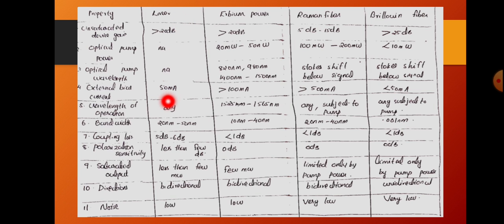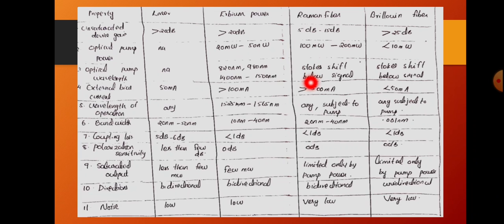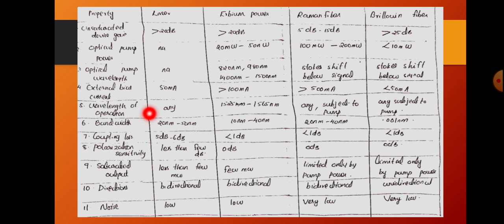When comparing external bias current, for the laser it is 50 mA. For erbium fiber it is greater than 100 mA. For Raman fiber, since the pump power is higher, the corresponding current is greater than 500 mA. In the case of Brillouin fiber, the external bias current is less than 50 mA.